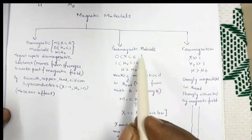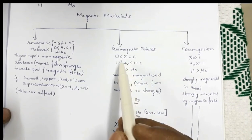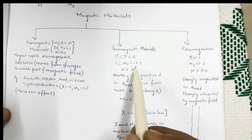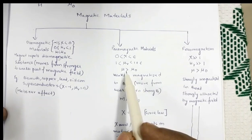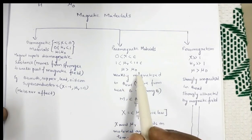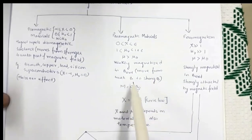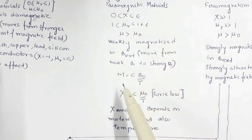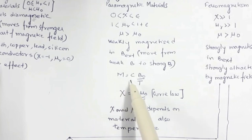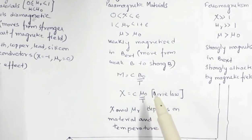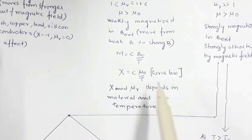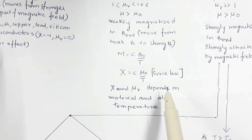For paramagnetic materials, the magnetic susceptibility is between 0 and ε, so relative magnetic permeability is between 1 and 1+ε, and magnetic permeability is greater than that of free space. They are weakly magnetized in an external magnetic field and move from weak to strong magnetic field regions. The magnetization is related to temperature by M = CB₀/T, where B₀ is the external field, C is the Curie constant, and T is the temperature. Curie's law states that magnetic susceptibility is inversely proportional to temperature.